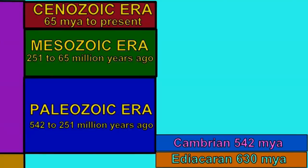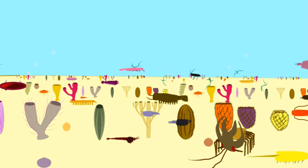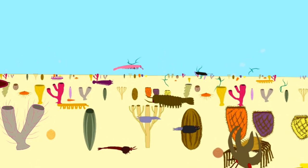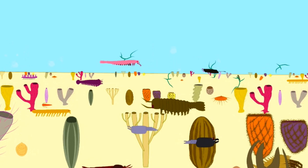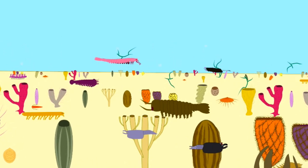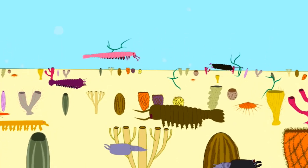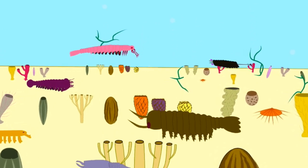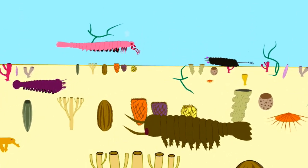Given that there are no vertebrates — zero — which are known from the pre-Cambrian, and given that the very first vertebrates, which are also the very simplest fish, appear in the early Cambrian, that means that somewhere in the early Cambrian the earliest vertebrates evolved.